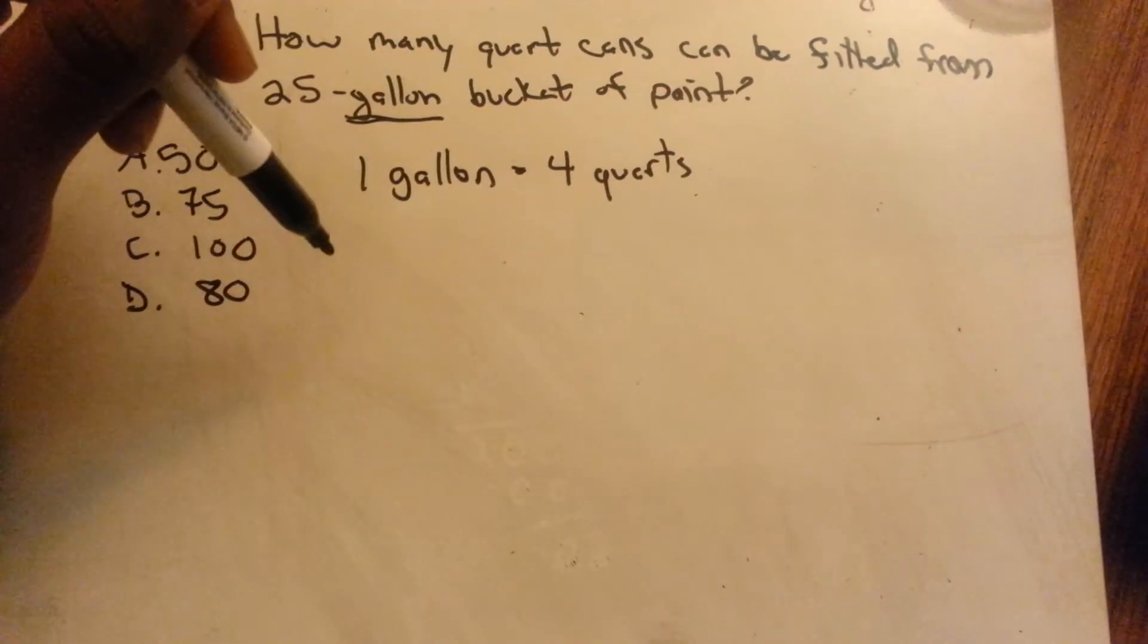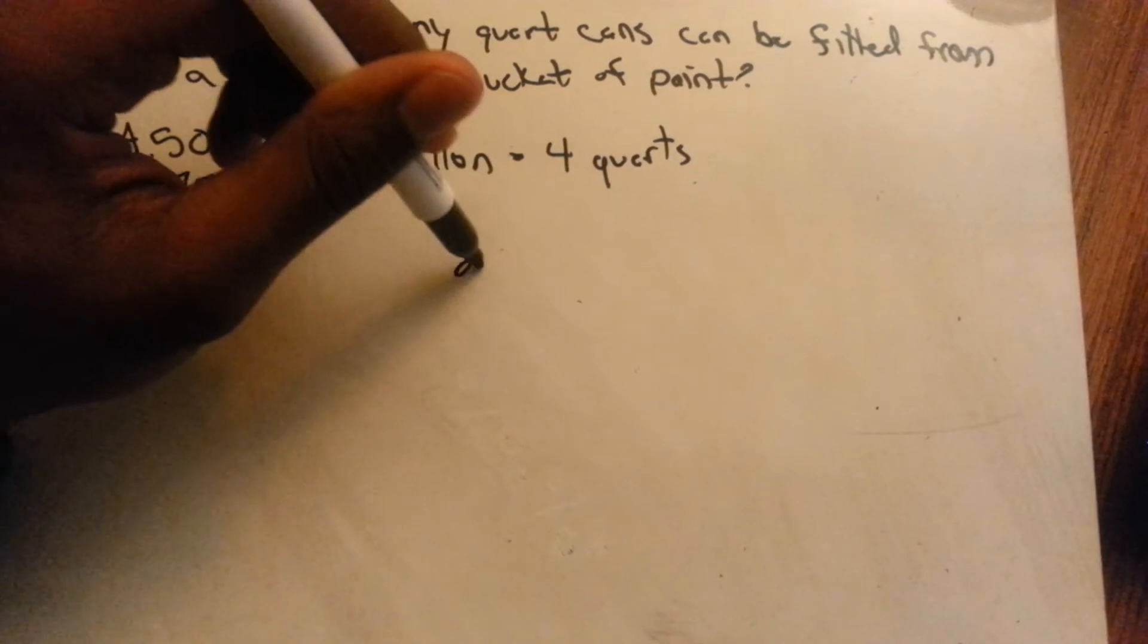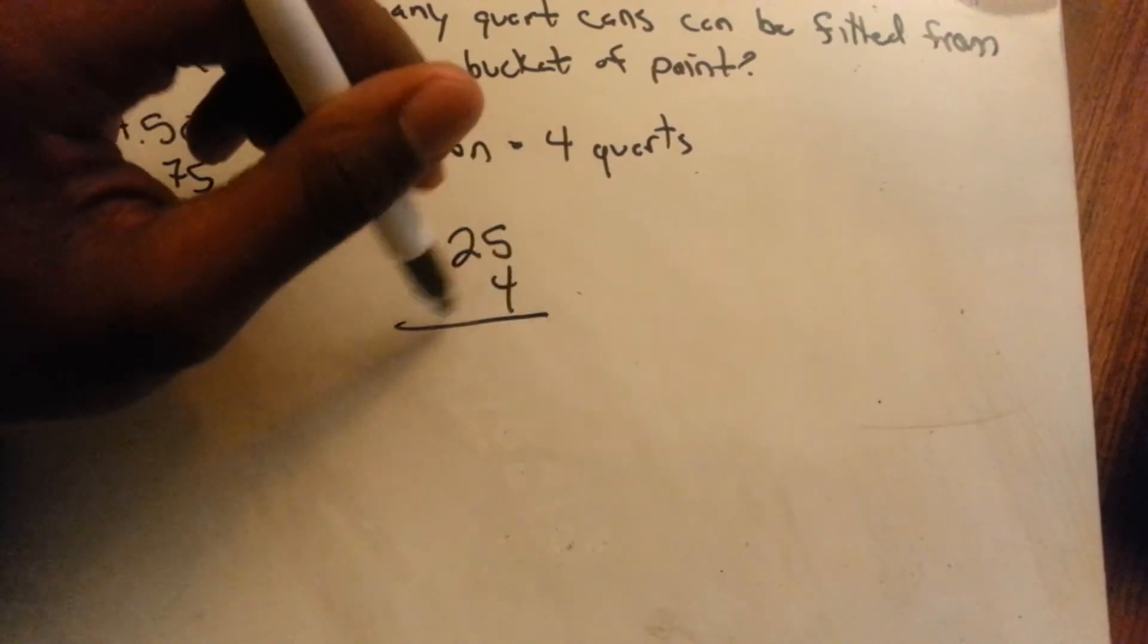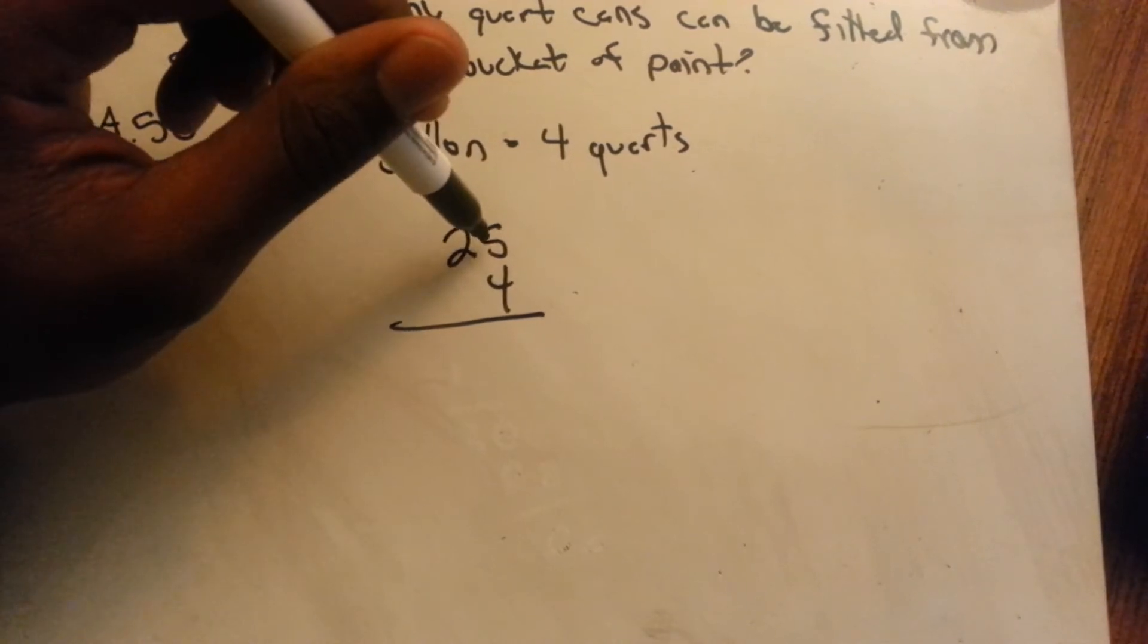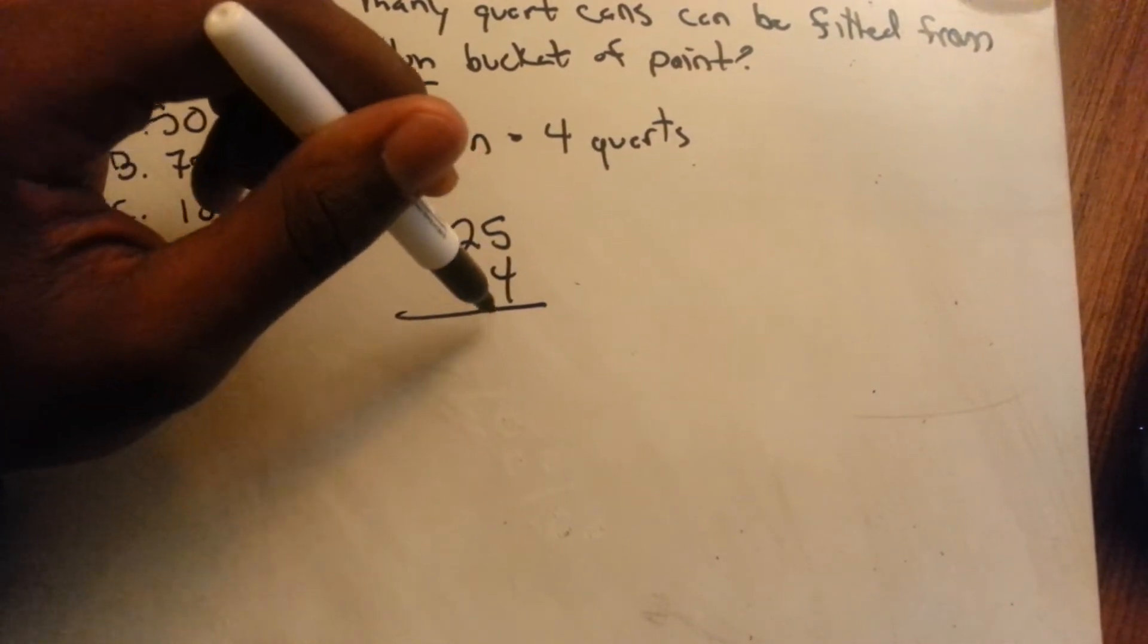So basically all you would do is multiply. There's 25 gallons, multiply the 25 gallons times four, because there's four quarts in one gallon, and there's 25 of those. So you just multiply it.